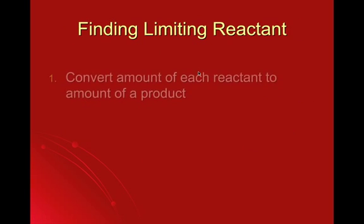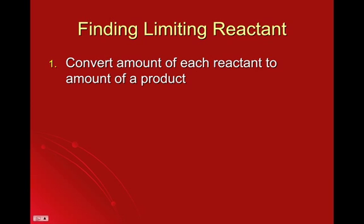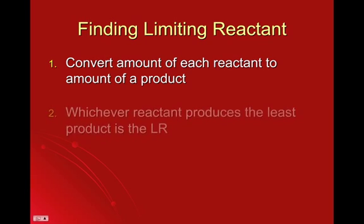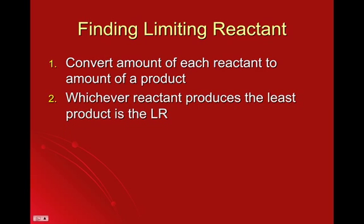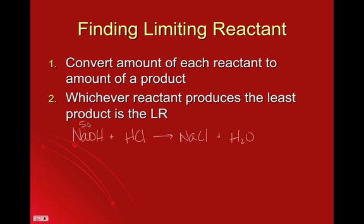So, how do you do that? Take the amount of each reactant that you were given and convert it to an amount of product. It doesn't matter which product you choose, just so long as you choose the same product each time. Then compare the amounts — whichever reactant produces the least is your limiting reactant. Going back to the sodium hydroxide and hydrochloric acid example, with five grams of each, you set up two separate stoichiometry calculations.